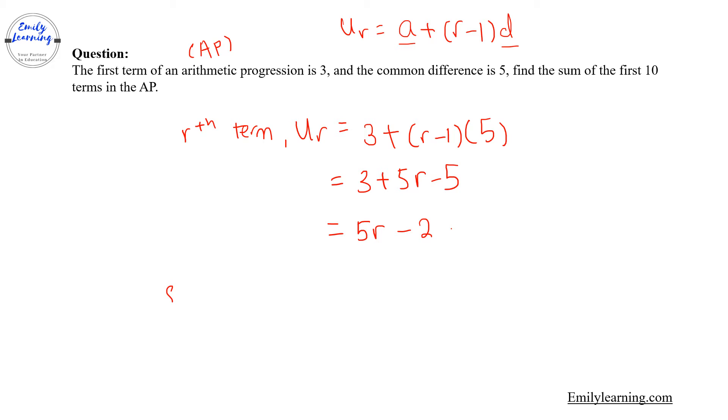So next I want to find the sum of first 10 terms. To find the sum of the first 10 terms, of course we can make use of the formulas in the AP chapter. So sum of first n terms will be equal to n over 2 times [2a plus (n minus 1) times d].